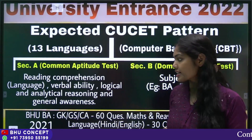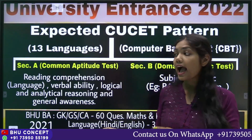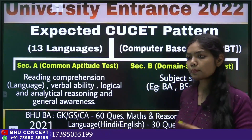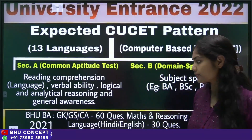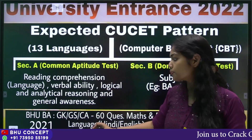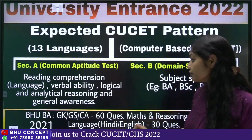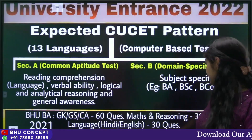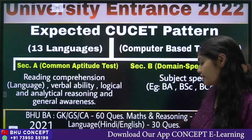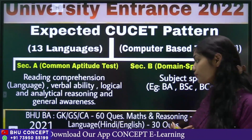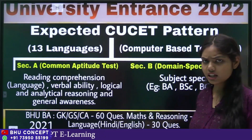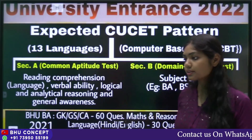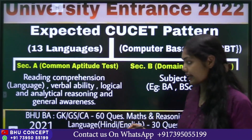In the previous year, NTA conducted the BHU entrance test, and now CUCET will also be conducted by NTA. So the paper will be in a similar pattern. Looking at the BHU BA 2021 paper, there were 60 questions from GK, GS, and Current Affairs, 30 questions from Maths and Reasoning, and 30 questions from Languages — either Hindi or English — and you can choose either one.